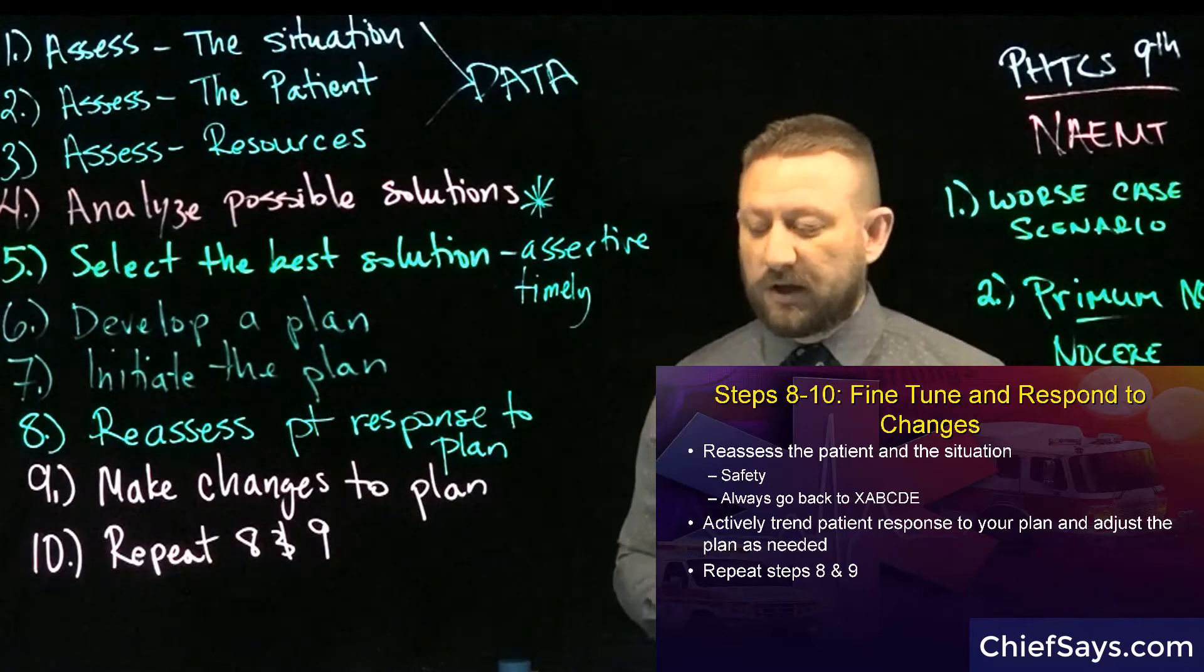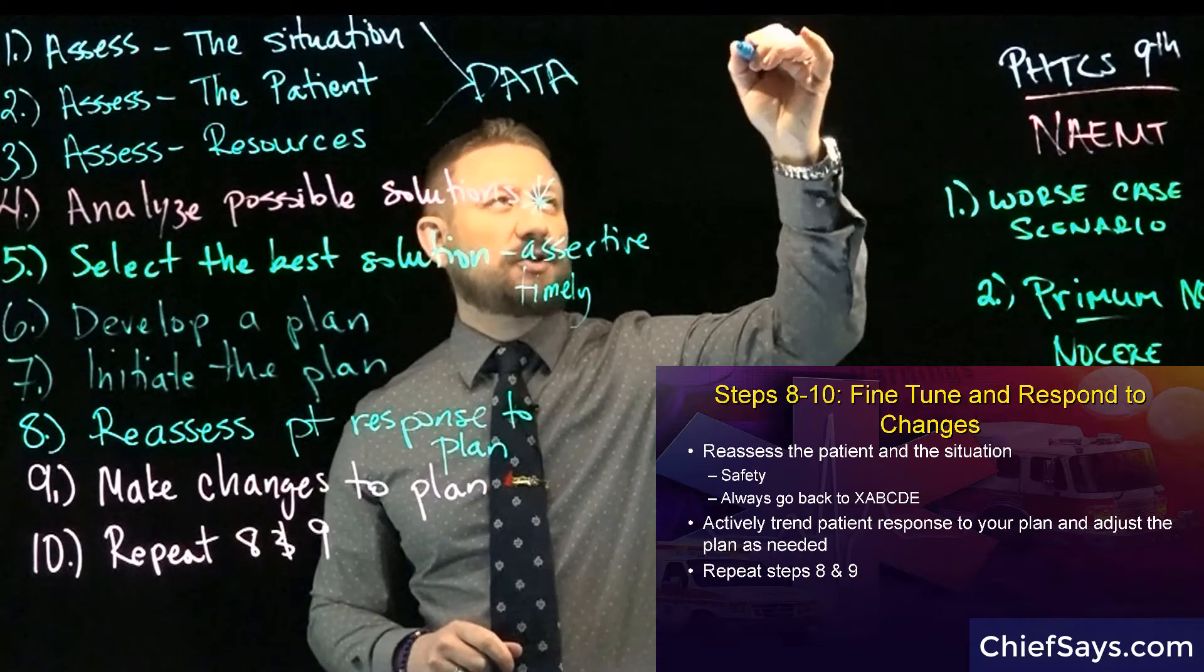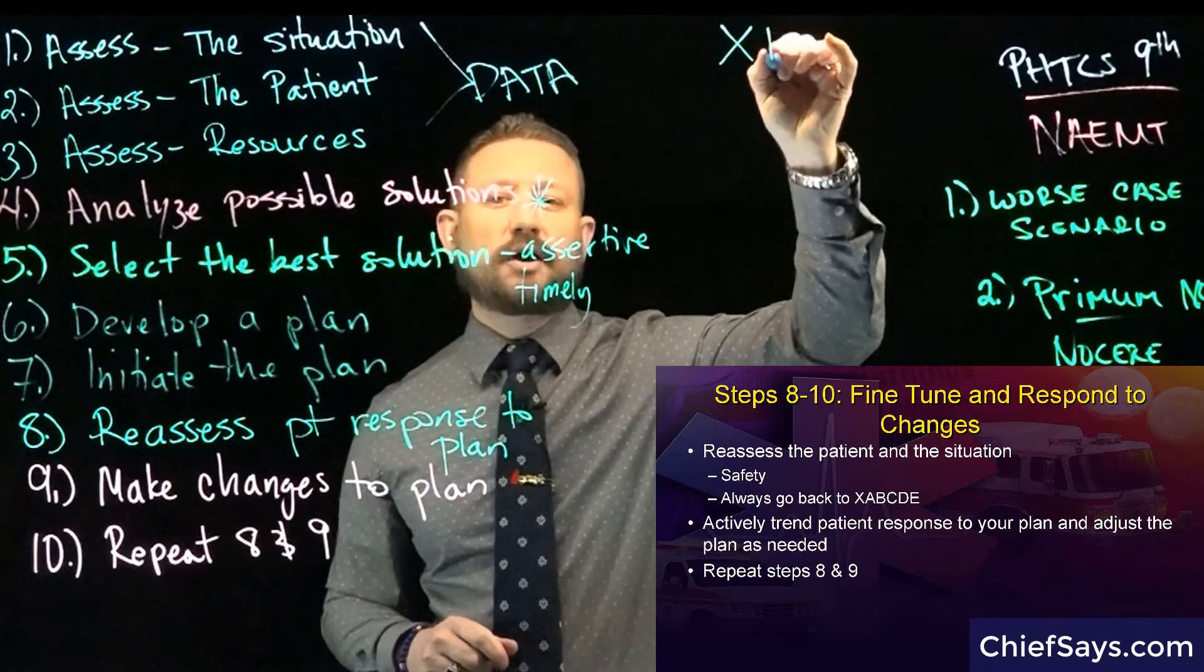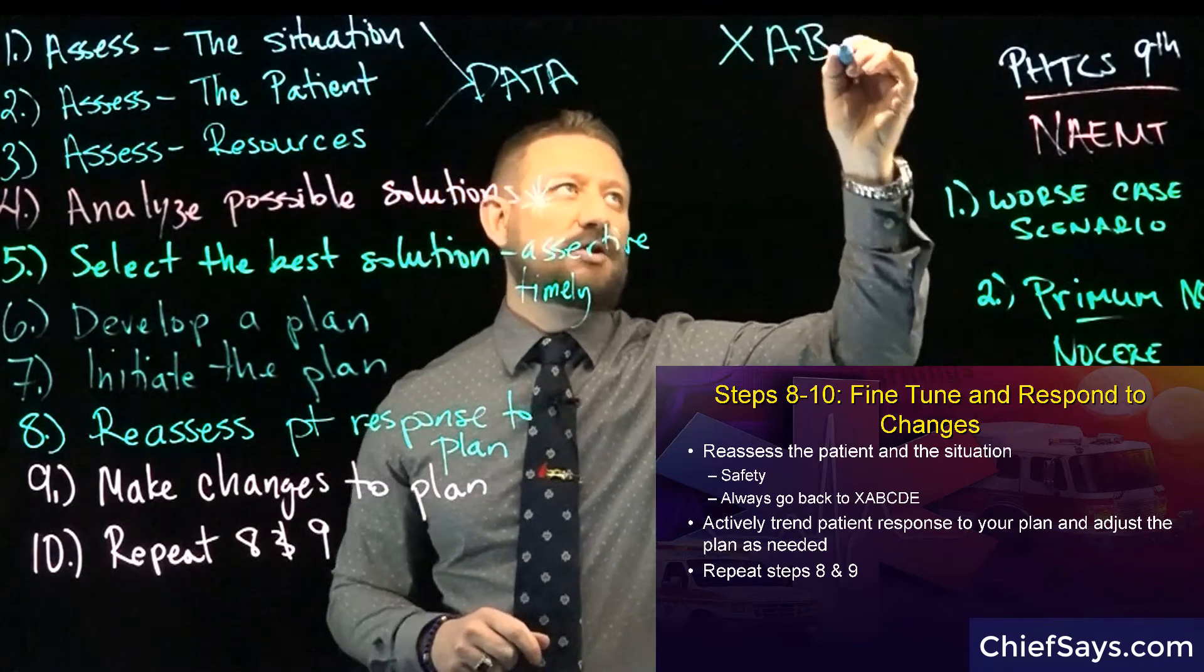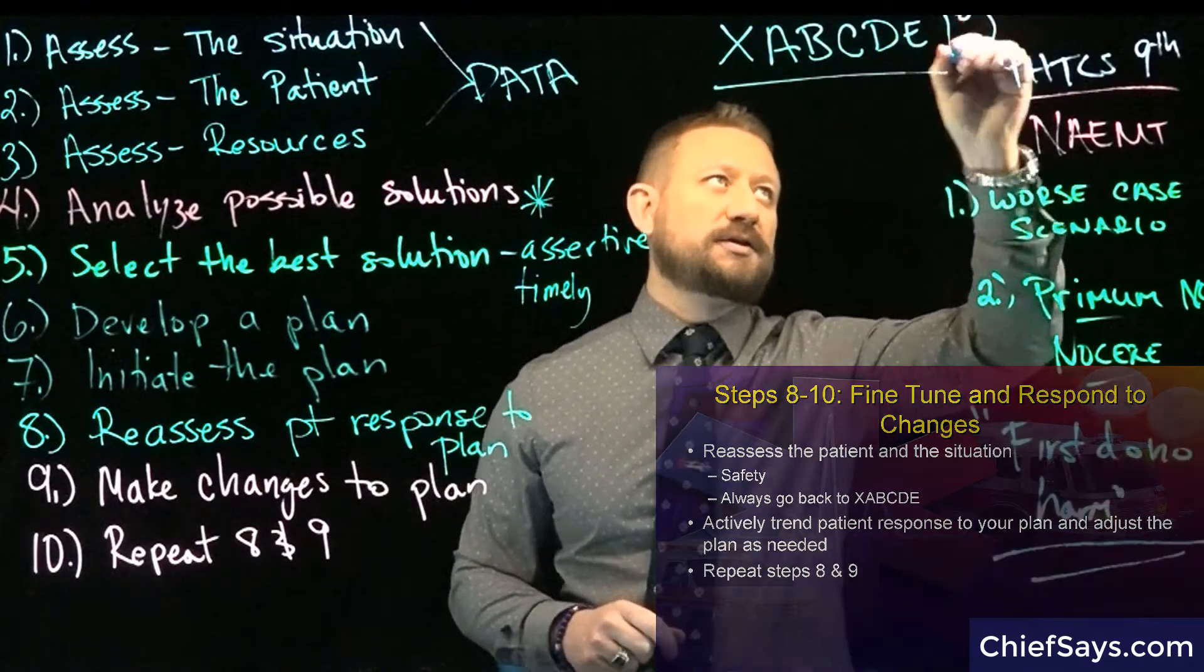Now, there is a change that we'll talk about later to the primary assessment. And so in PHTLS now, they recommend the primary assessment is no longer A, B, C, D, and E alone. It's X, A, B, C, D, and E for primary assessment.